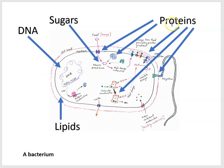We can identify different kinds of molecules inside cells: proteins performing many kinds of chemical reactions; sugars, which are a source of energy for many cells; lipids, which make up the membrane itself; and DNA, found inside the nucleus of plants, animals, paramecia, and amoeba. Bacteria also have DNA — it's just not surrounded by a nuclear membrane.